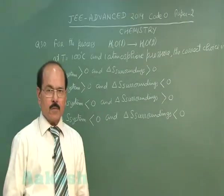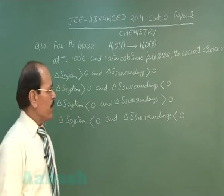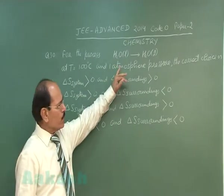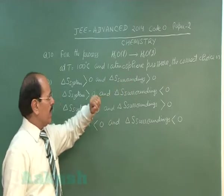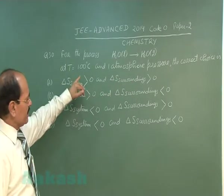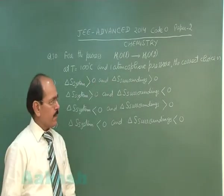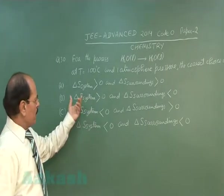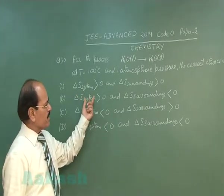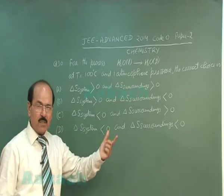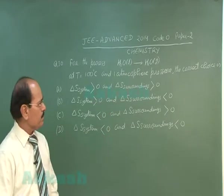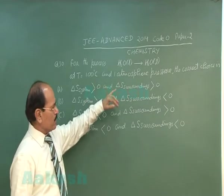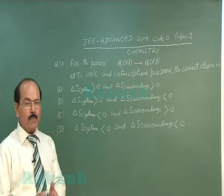Question number 30 of the paper reads: for the process liquid water to steam at 100°C and 1 atmosphere pressure, the correct choice is — four options are given about the entropy change of the system and the entropy change of the surroundings. The system at 100°C and 1 atmosphere pressure is in equilibrium.